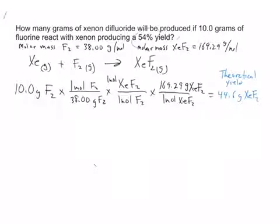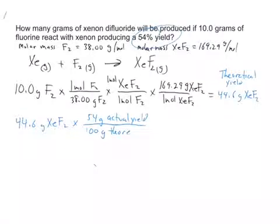It says that the percent yield is 54%. So we're going to take this 44.6 grams XeF₂. That's the theoretical. And we're going to multiply that by the percent. That is 54 grams actual yield for every 100 grams theoretical yield. So 54% means 54 grams actual for every 100 grams theoretical.